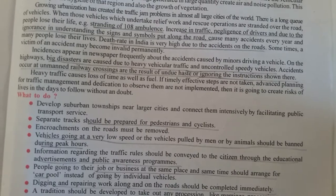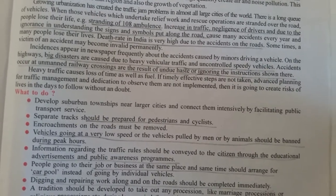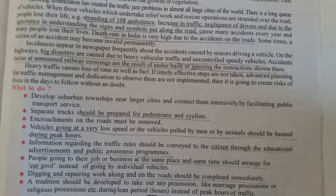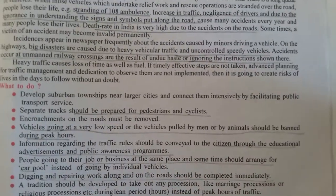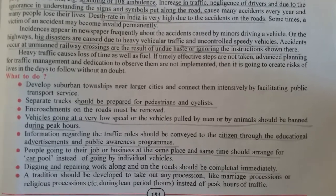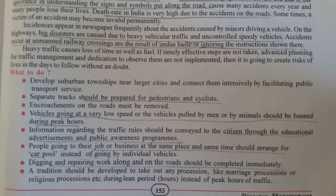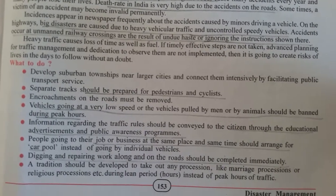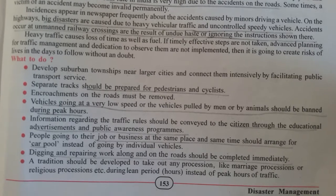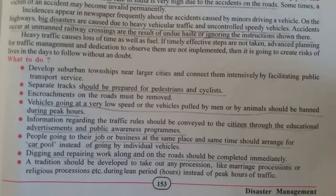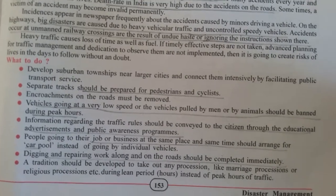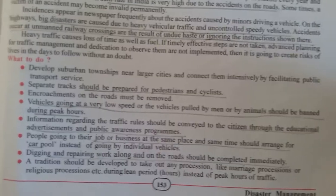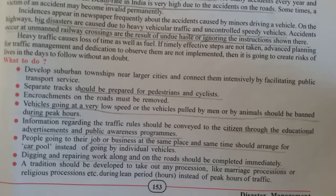Unmanned railway crossings are also a major reason for accidents, because instructions are ignored. Heavy traffic causes loss of time as well as fuel — people don't stop their vehicles at traffic signals, so fuel is also wasted and time is also wasted. We should make effective steps so that proper traffic management planning occurs, and at the same time, dedication should be observed to maintain and implement the rules. When these rules are not taken seriously, we are putting our own lives at risk.